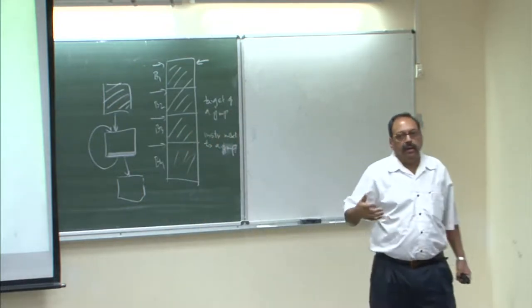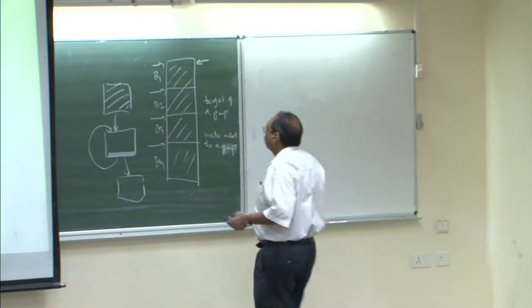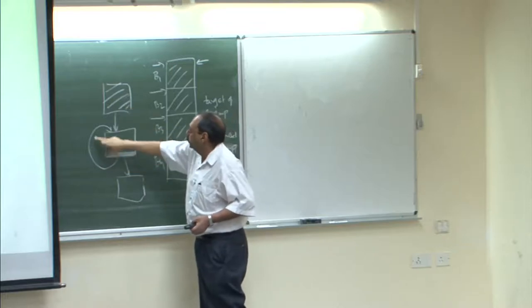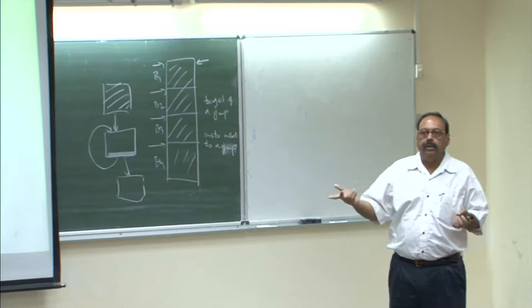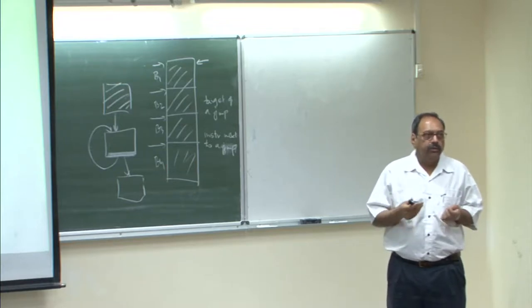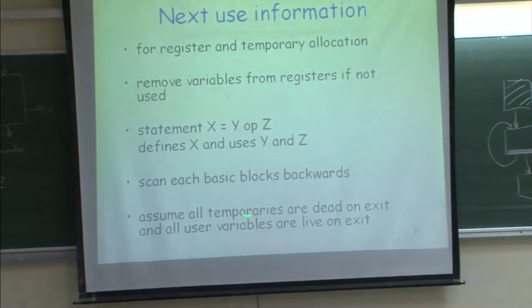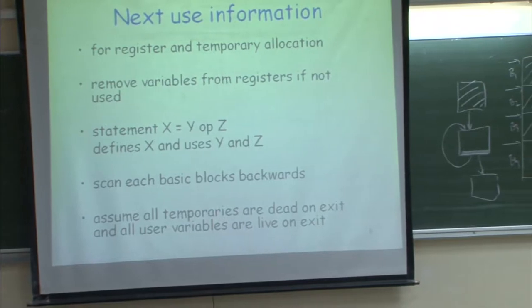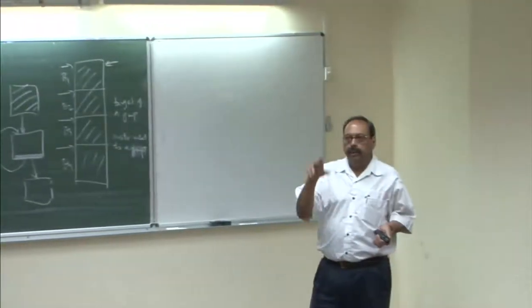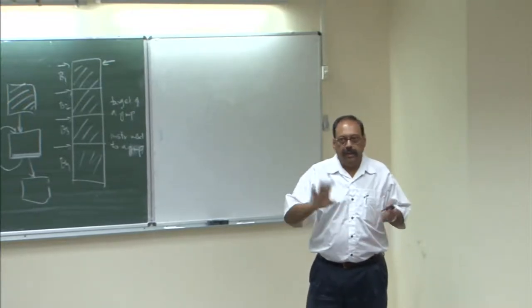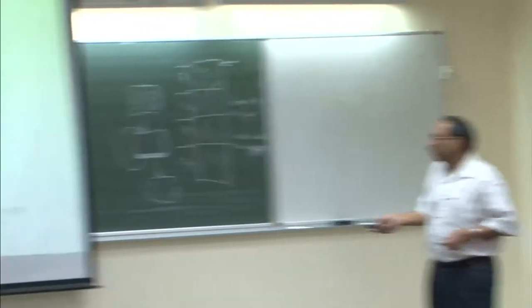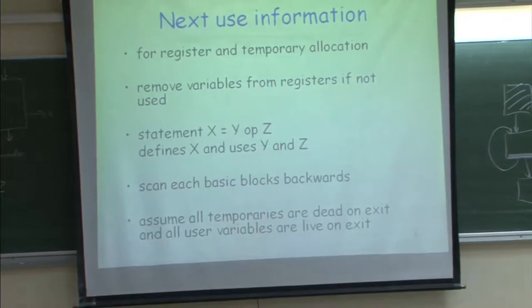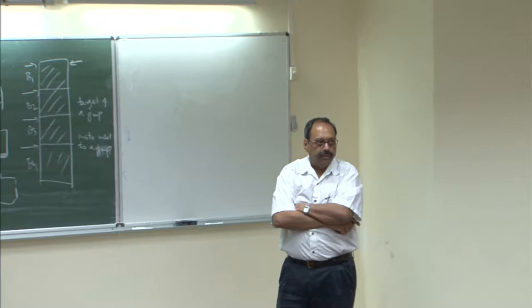There is another technique for optimization across basic blocks, which requires data flow analysis, because you do not know which path will be followed. To reach a particular basic block you can follow different paths, and optimization must cover all paths. Within a basic block there is only one path, so data flow analysis is not needed — that is what makes it simple. Our boundary condition: all temporaries are dead on exit and all user variables are live on exit. User variables have lifetime equal to the whole program, but temporaries have lifetime limited by the basic block boundaries.